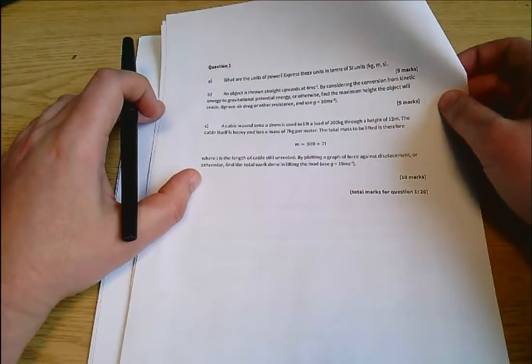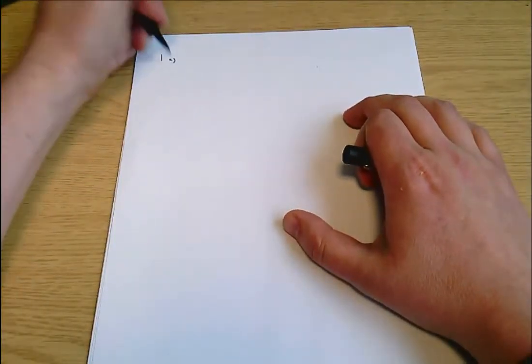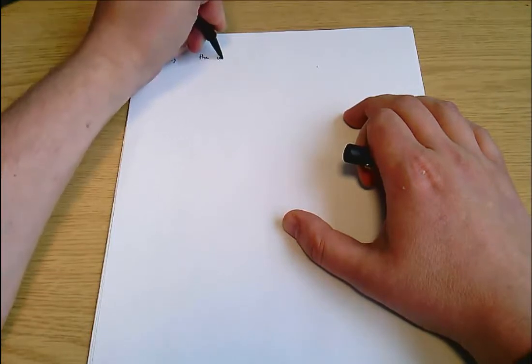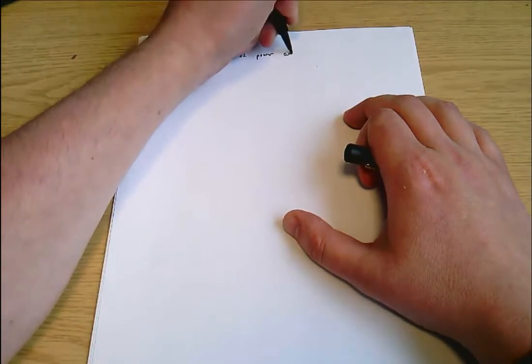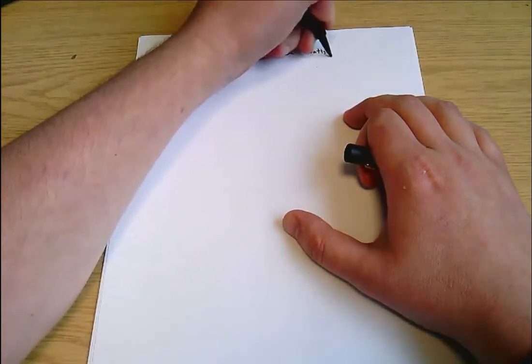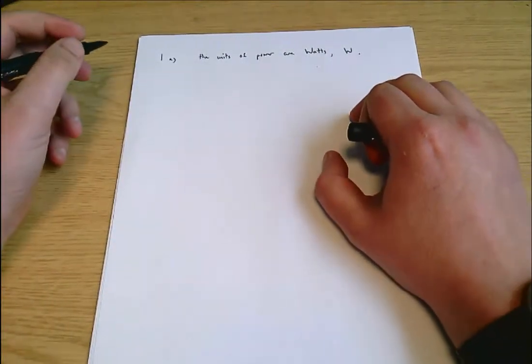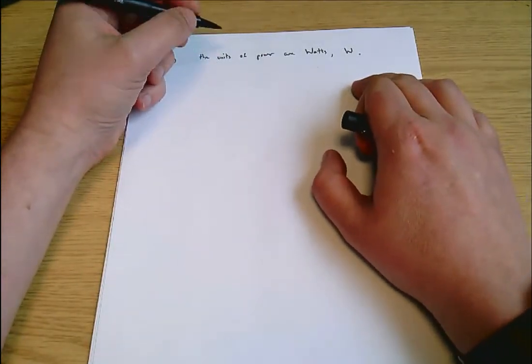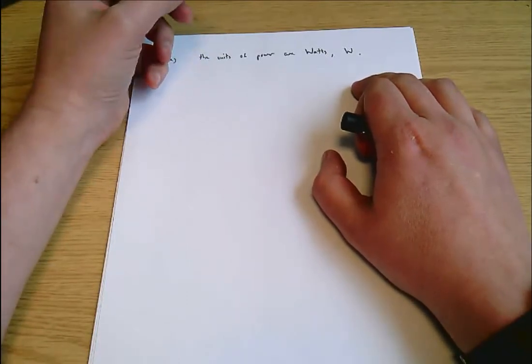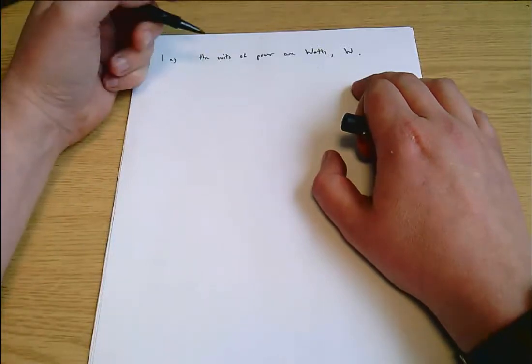What are the units of power? Express these units in terms of SI base units. Some part of this is just about knowing the units of power are watts, represented by W in the standard metric system of units. The capital W is power in watts. Then it says express these units in terms of SI base units, and it wants it in kilograms, meters and seconds.